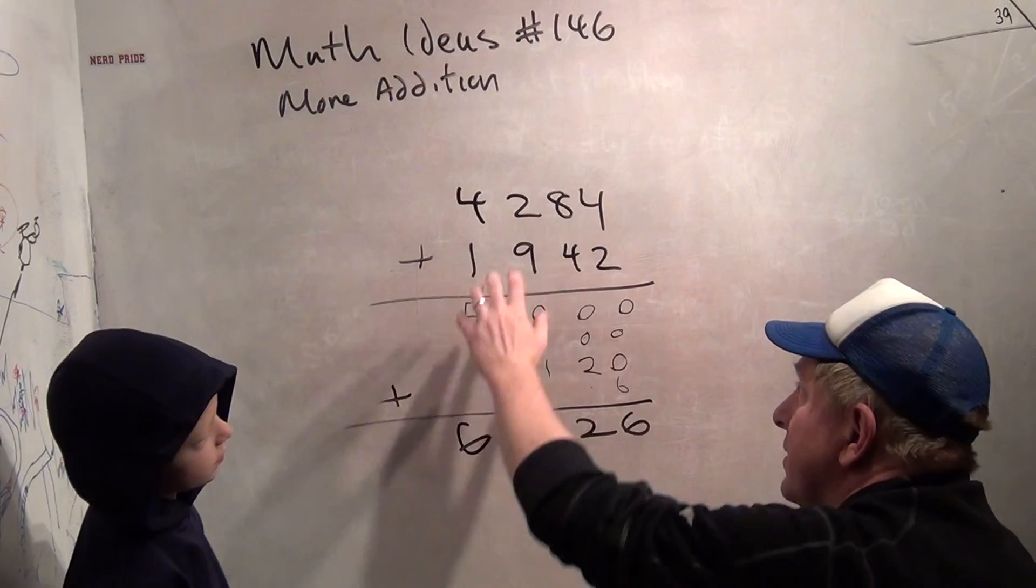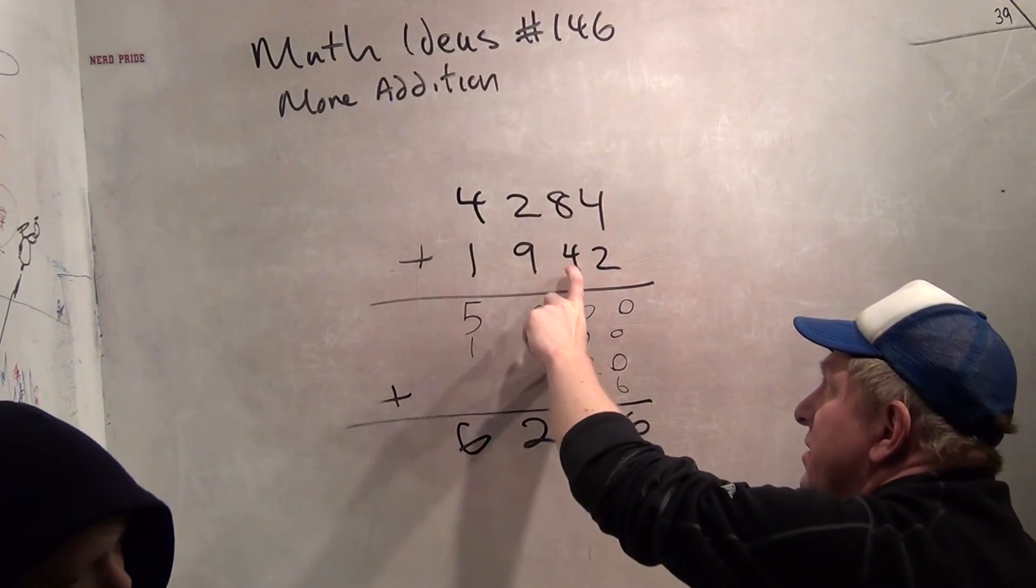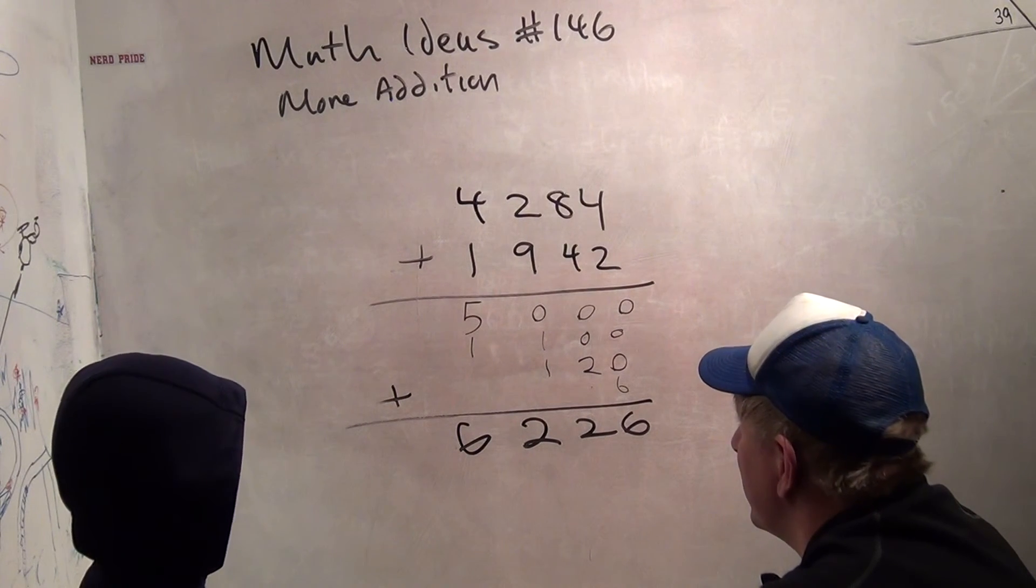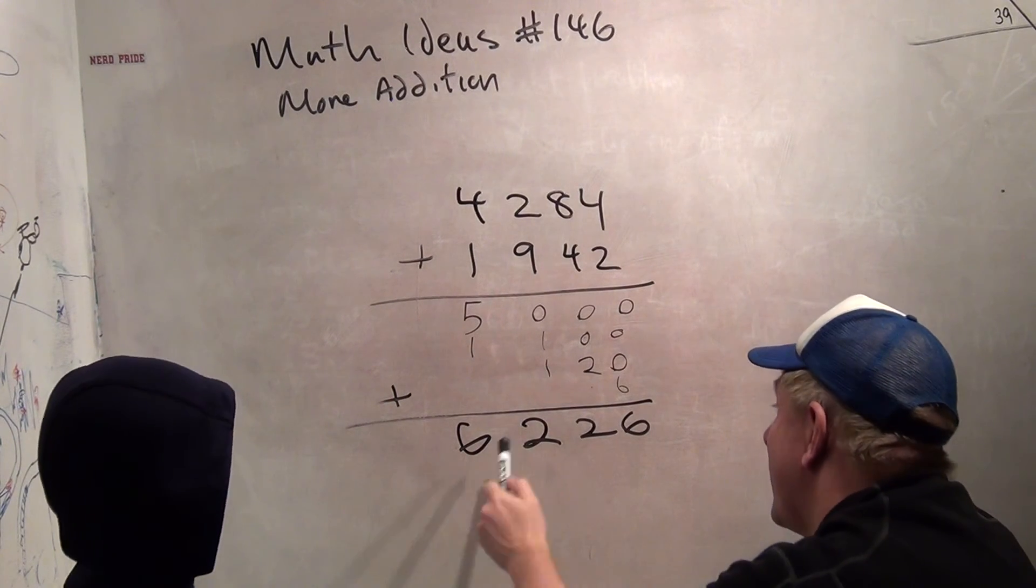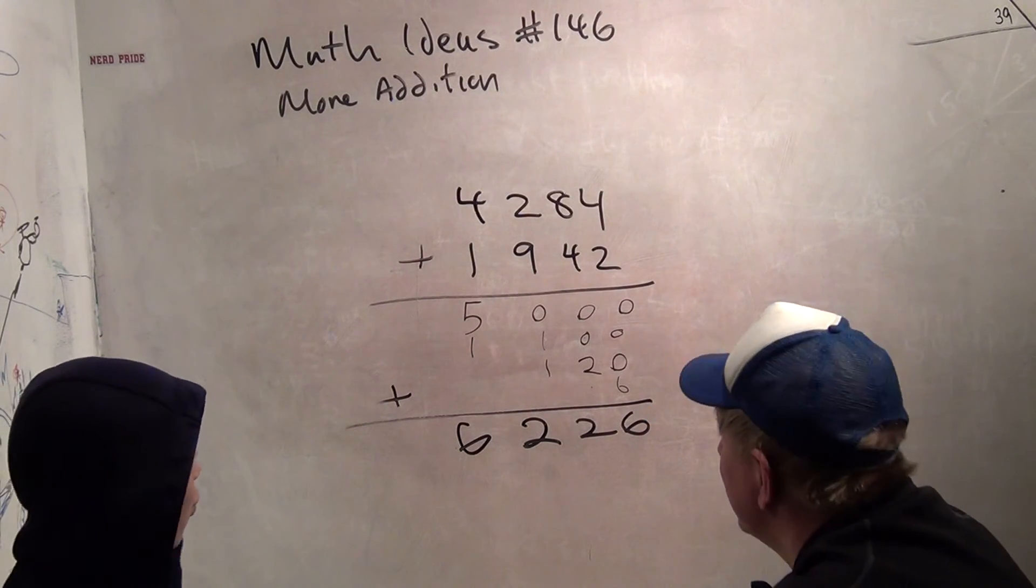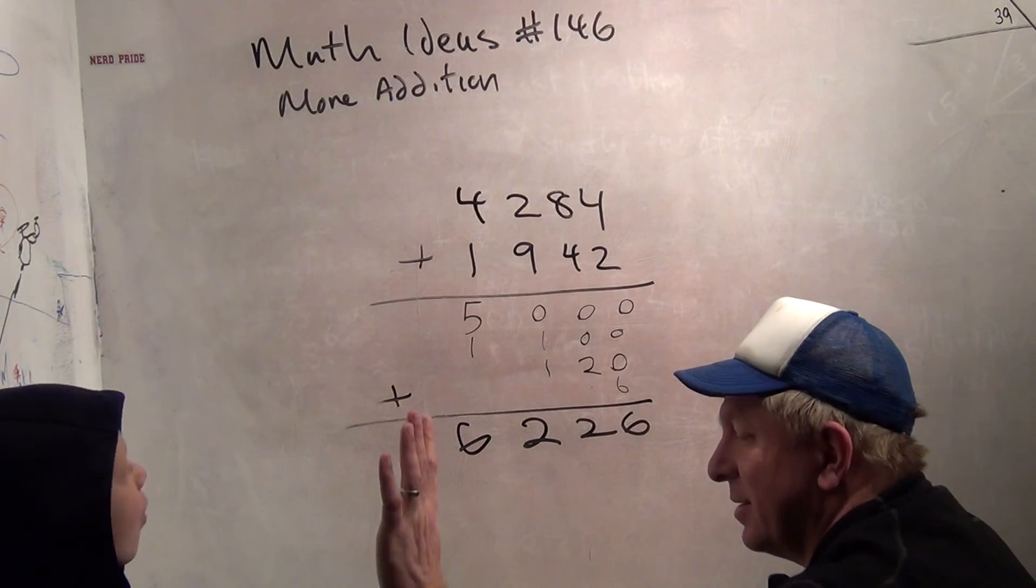So you just keep doing it exactly the same way. You add up the thousands, the hundreds, the tens, and the ones, and then you just add them up. So 4,284 plus 1,942 is 6,226. Can you believe that? Cool. Good job today.